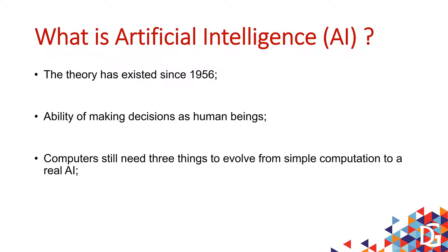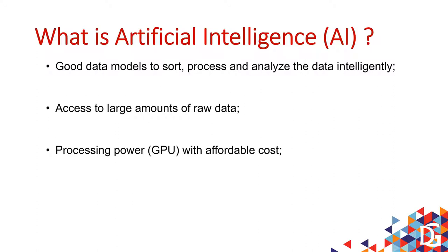If you have this theory for so long, why only now can we build something we can show to clients? This is because we have three pillars needed to build a good AI solution. The first thing you need when working with artificial intelligence is data. The term big data is not new — the idea is to manipulate, work with, and process a large amount of raw data.